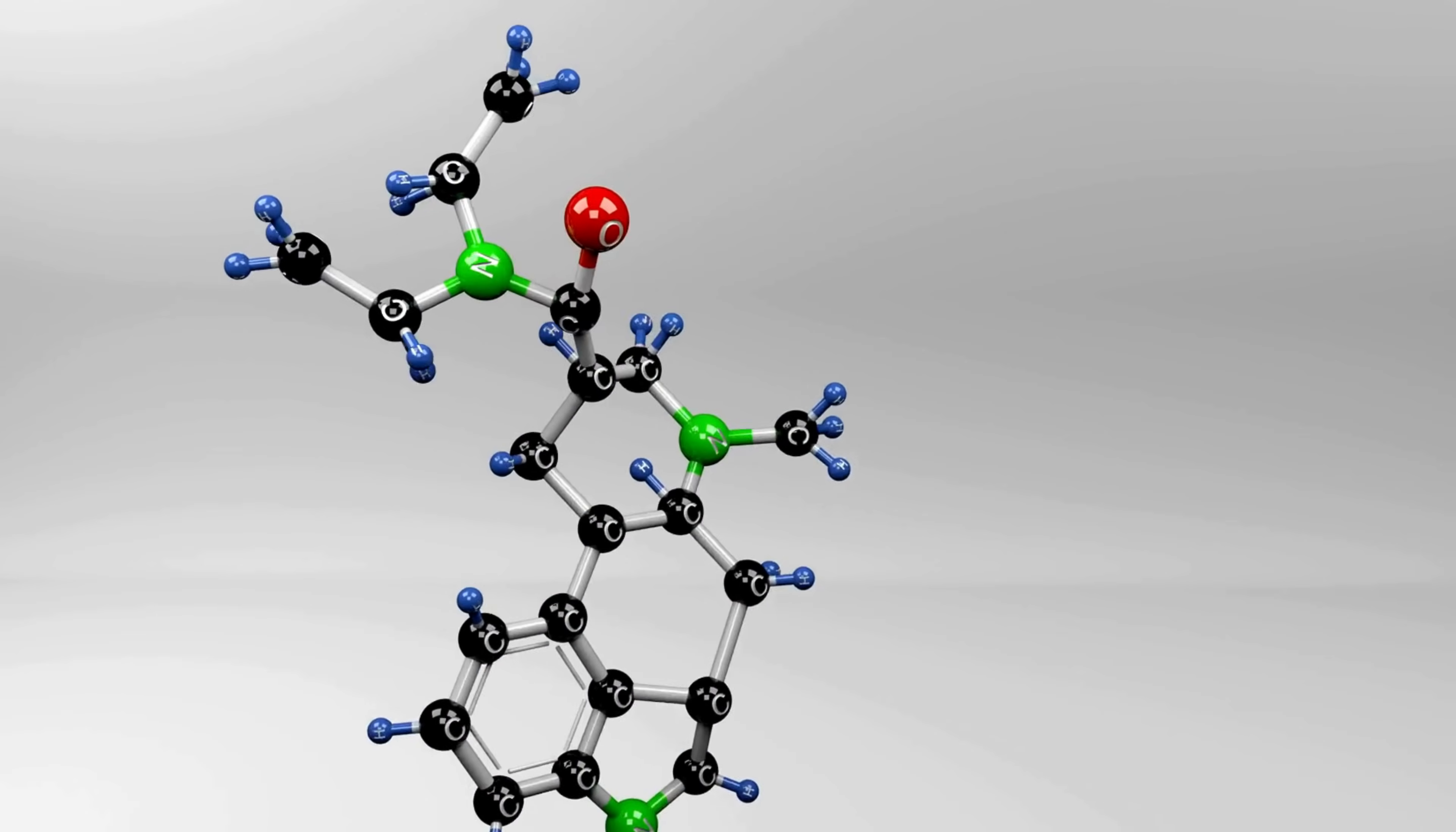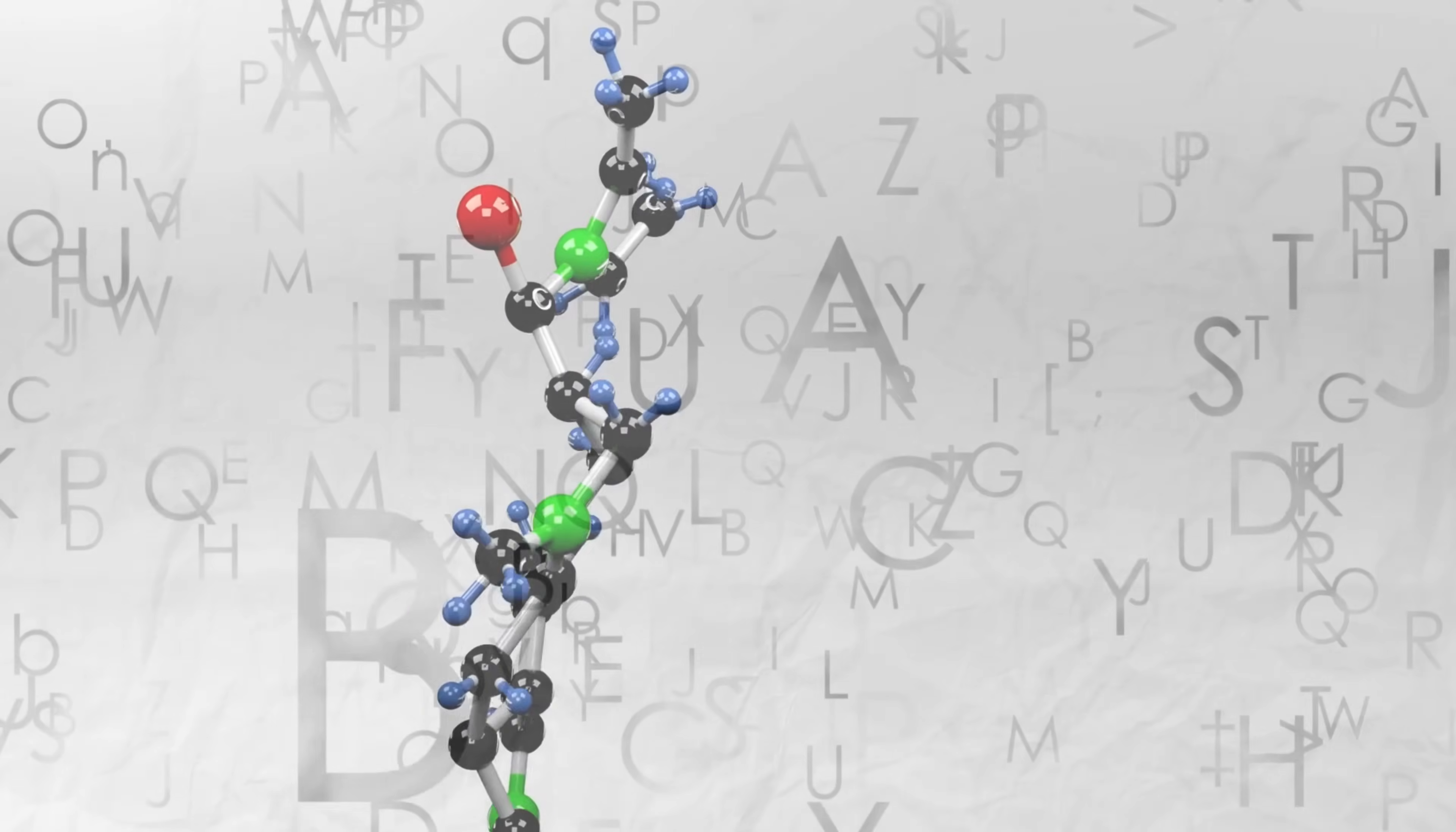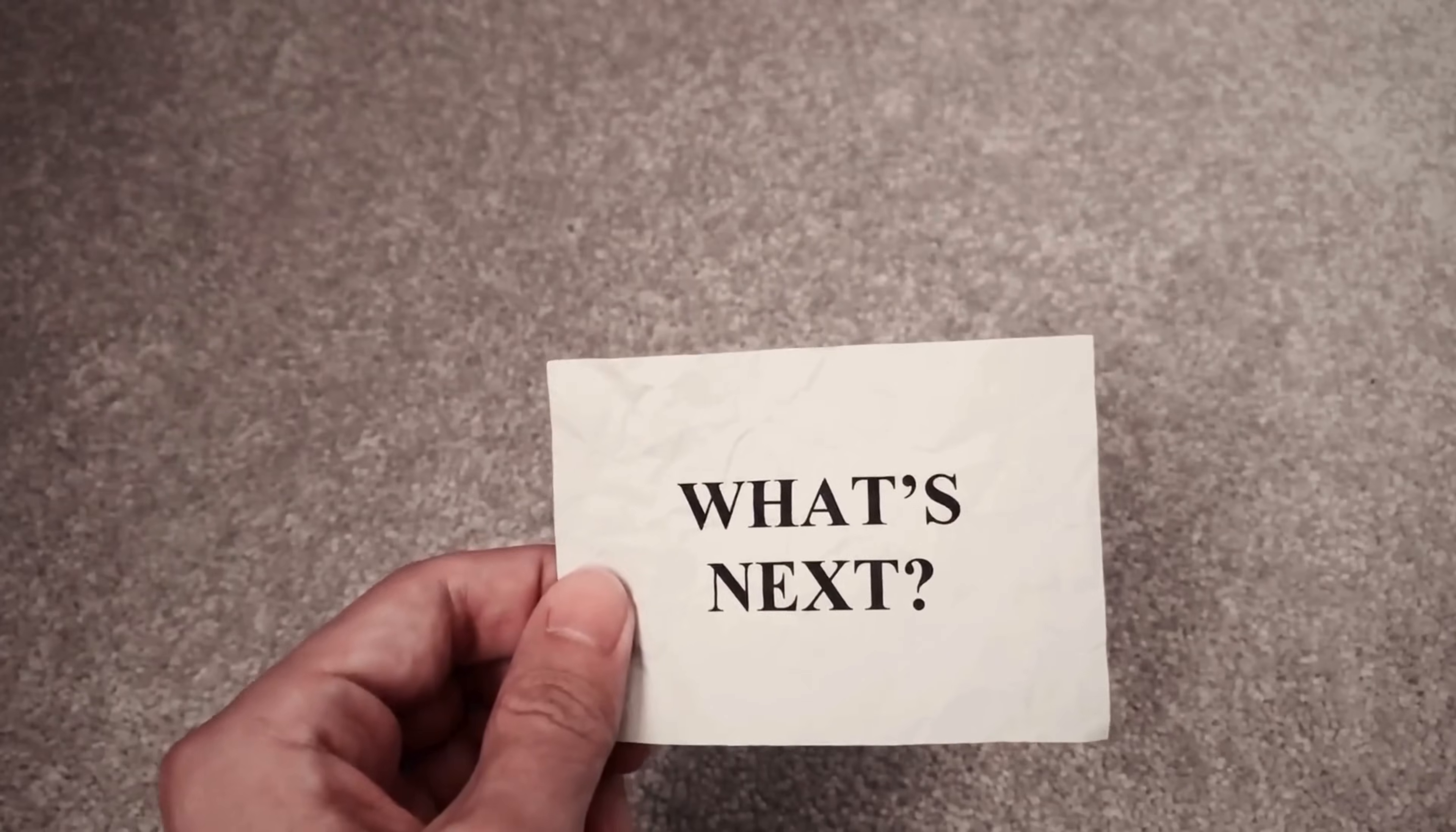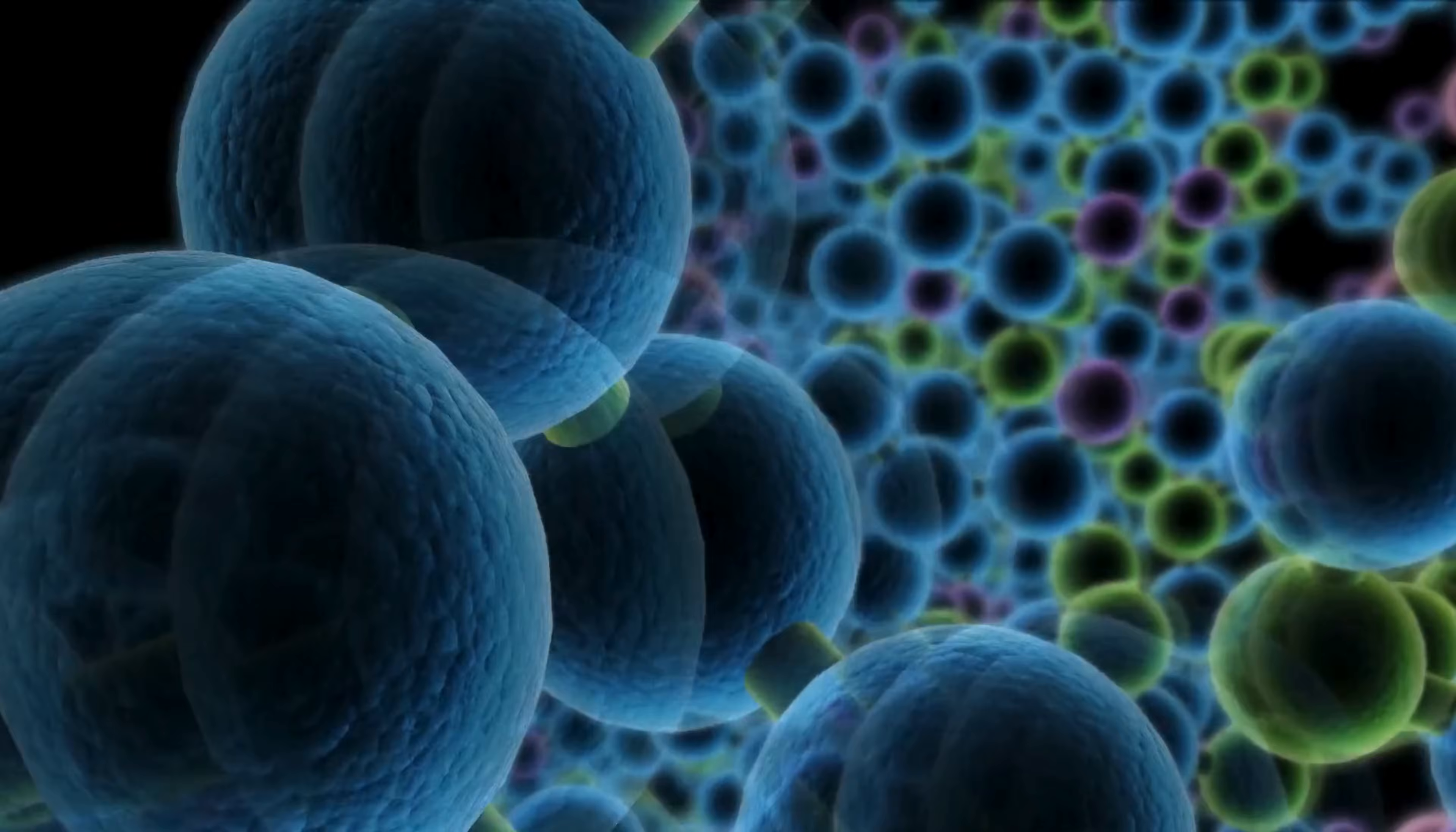But, while amino acids are essential, they aren't life itself. They are like letters in an alphabet, and they still need to form words, sentences, and ultimately a story. So, what came next? How did these basic molecules organize into the complex structures needed for living organisms?